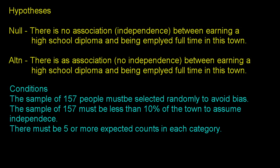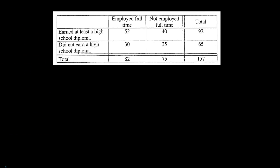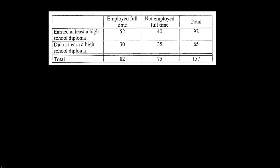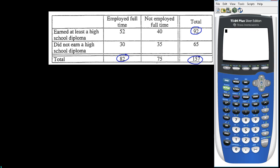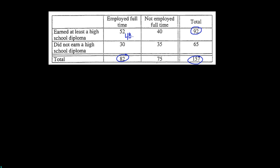Let's check the conditions. The sample of 157 people must be selected randomly to avoid bias. The sample of 157 must be less than 10% of the town to assume independence. And there must be five or more expected counts in each category. To find the first expected count — employed full-time with a diploma — we take row total 92 times column total 82, divided by grand total 157, which gives us 48.05.